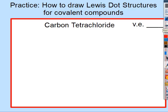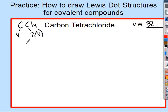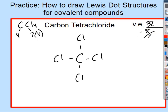One more together: carbon tetrachloride, CCl4. Step one — add up valence electrons. Carbon has four and chlorine has seven, with four chlorines: four plus twenty-eight is thirty-two valence electrons. Carbon is the central atom since there is only one. Each line represents two electrons, so two times four is eight subtracted, leaving twenty-four electrons.